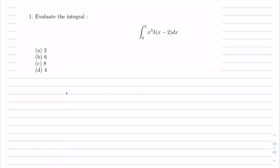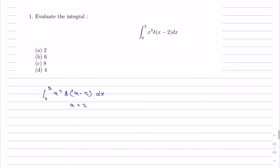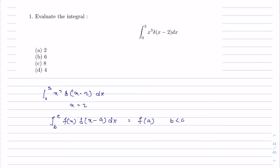The first problem is the integration from 0 to 3 of x² δ(x−2) dx. The delta function is defined at x equals 2, and the integration ranges from 0 to 3, so x equals 2 lies within that range. We can use the property: ∫_b^c f(x) δ(x−a) dx = f(a), provided b < a < c, and 0 otherwise. This condition is satisfied.